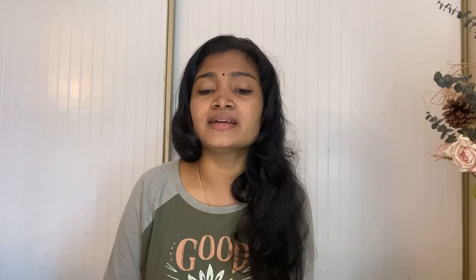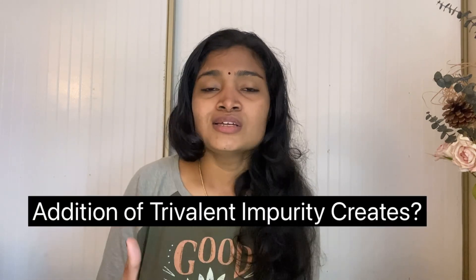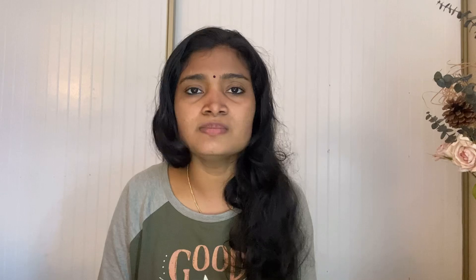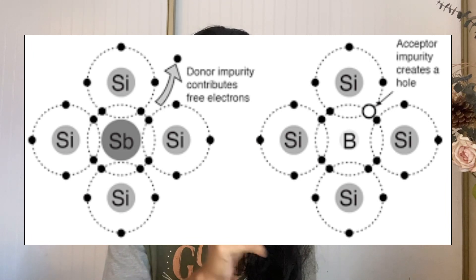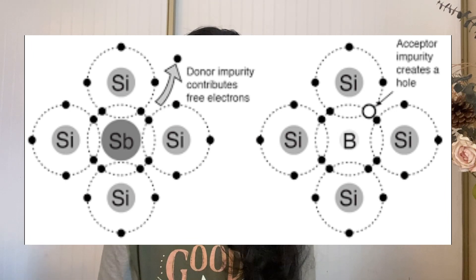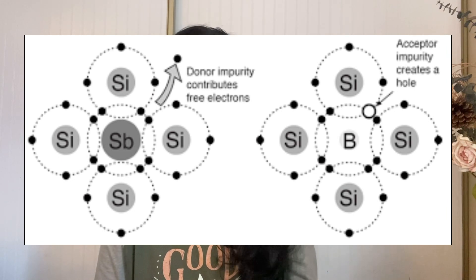The first question is: addition of trivalent impurity to a semiconductor creates many dash. There are two types of impurities we generally add to semiconductors to do the process of doping, or increasing or altering the conductivity of the semiconductor material. There are two types: pentavalent and trivalent. Pentavalent means, just like the name says, penta means five — so a pentavalent impurity atom has five valence electrons in the outer shell.